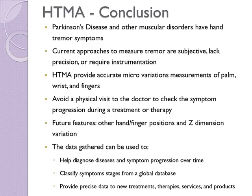The HTMA provides data collection for the hand tremor symptom common to many diseases such as Parkinson's disease. The existing approaches to evaluate the symptom lack precision, are subjective or require instrumentation. The HTMA provides objective, accurate and precise data without needing instrumentation or a doctor's appointment. The data gathered by the HTMA can help the evaluation of hand tremor symptom by comparing patient data and by following the symptom progression over time in order to evaluate the effectiveness of a treatment or therapy.